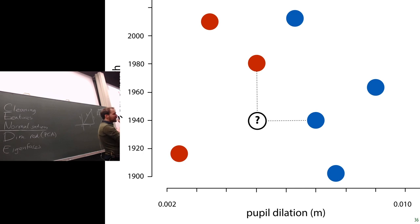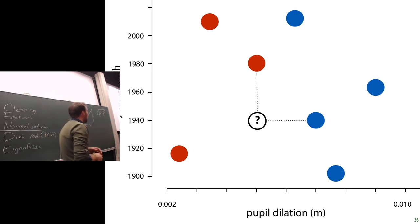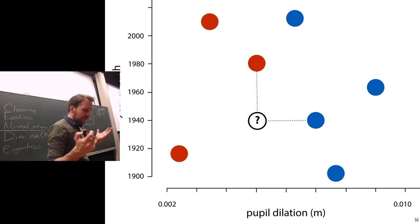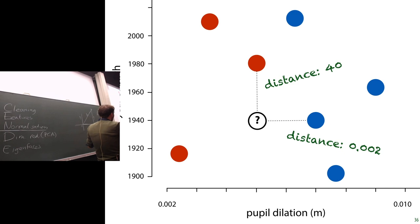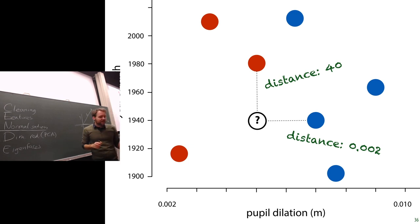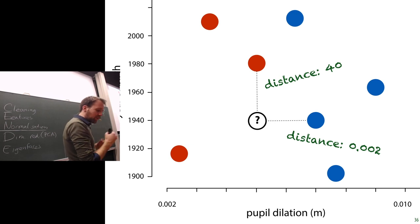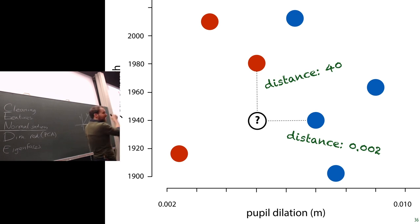What you want is normalization: ensuring both features have the same scale, so you're looking at the shape of your data rather than absolute values. Normalization squeezes your data into the range [0, 1]: subtract the minimum, then divide by the range. Standardization shifts and scales so the mean is 0 and variance is 1 — subtract the mean, then divide by the standard deviation.